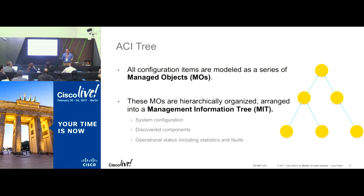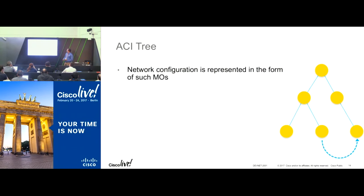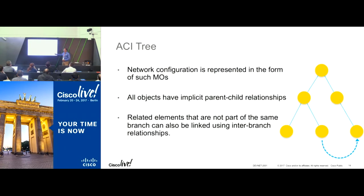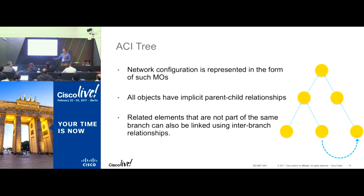REST calls are either GET or POST on managed objects. All network configuration is present in the Management Information Tree, and you can query at any level — a child, a middle node, or the entire parent tree. If you query for a tenant, you get just the tenant information. But if you query for all child objects of a tenant, you get all application profiles, BDs, VRFs, L2/L3 outs, and service information. You need to figure out what level you need for your automation.